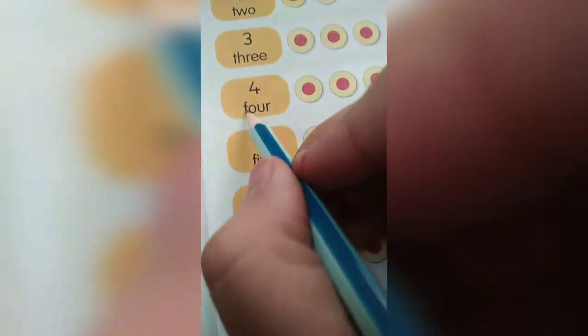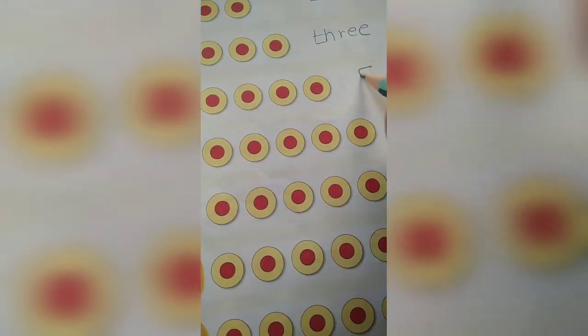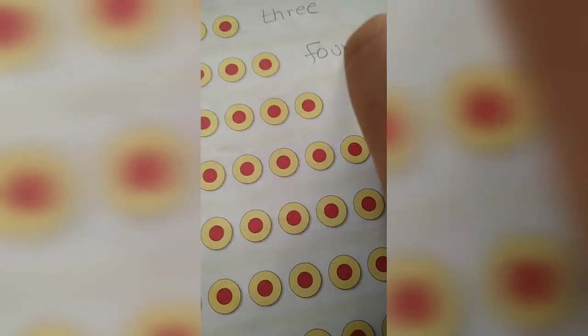Then comes 3, so you will write T, H, R, E, E, 3. F, O, U, R, 4. F, O, U, R, 4.